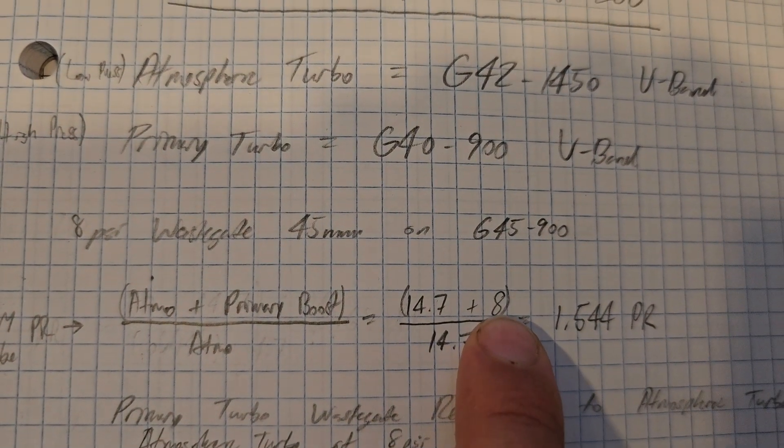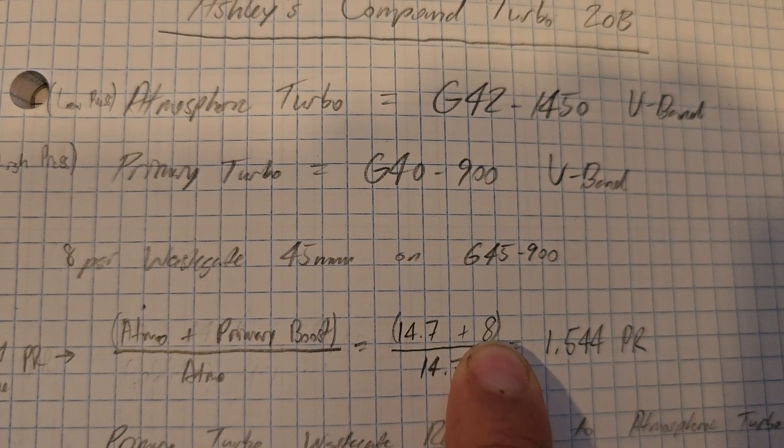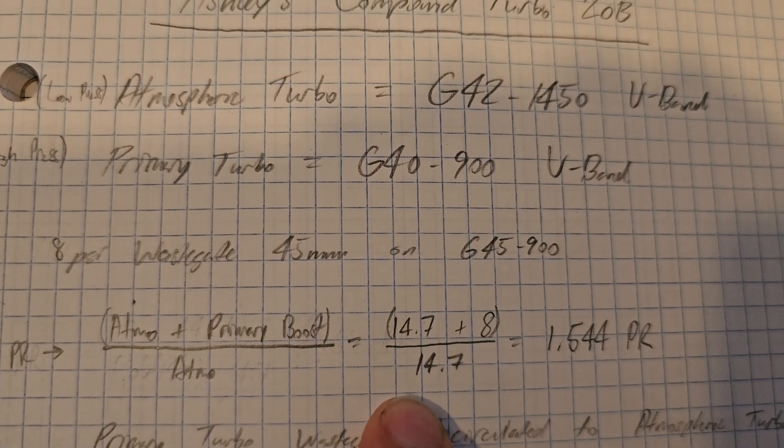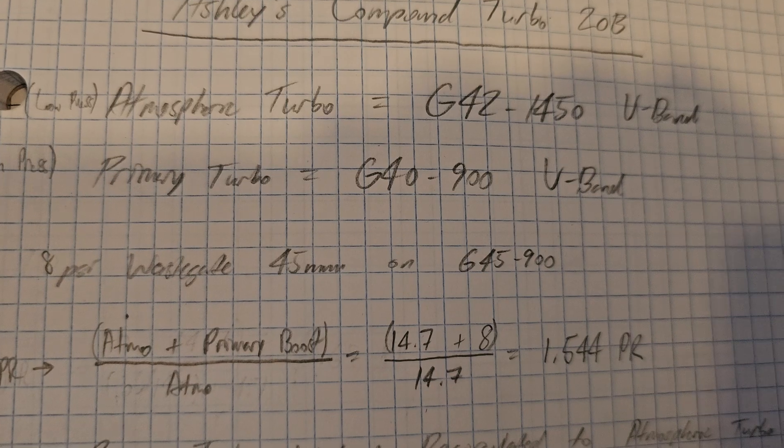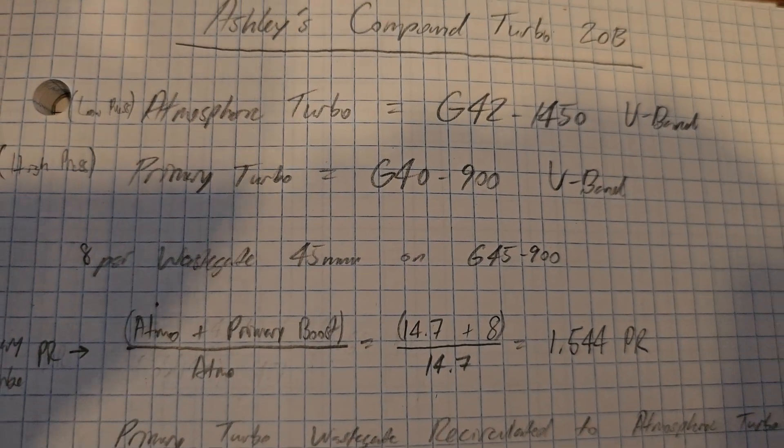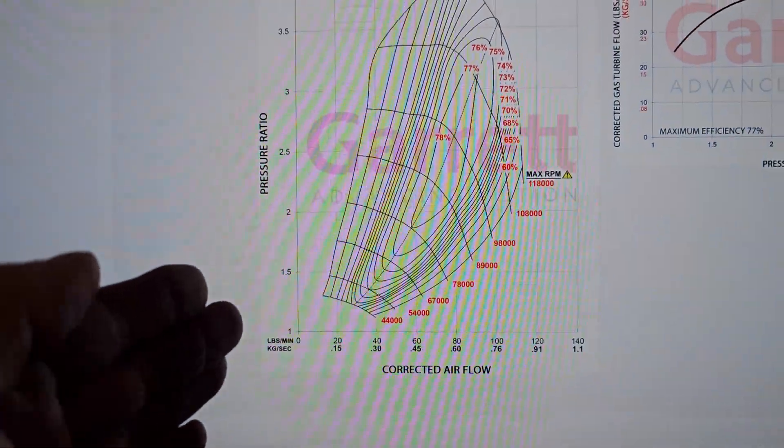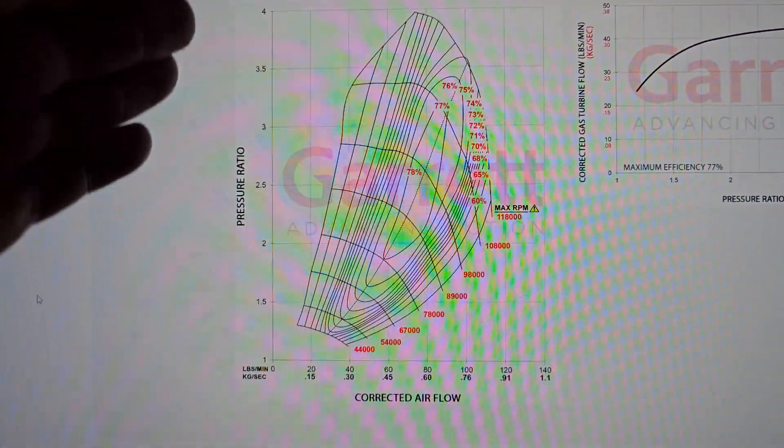Let's say, for instance, you are at 20 PSI. 20 plus 14.7 divided by 14.7 is your pressure ratio. Very, very simple concept. It'll tell you where you're going in your vertical axis.